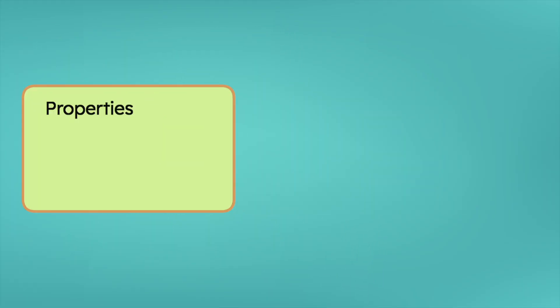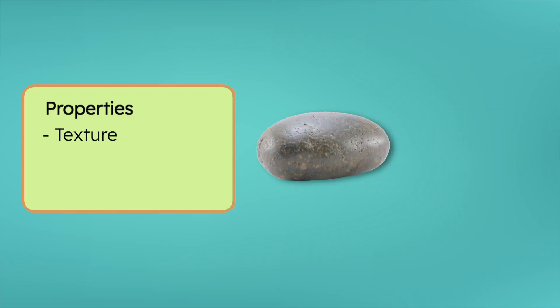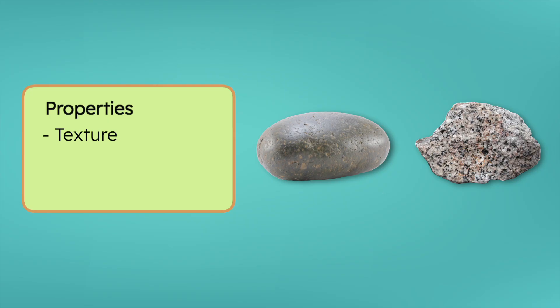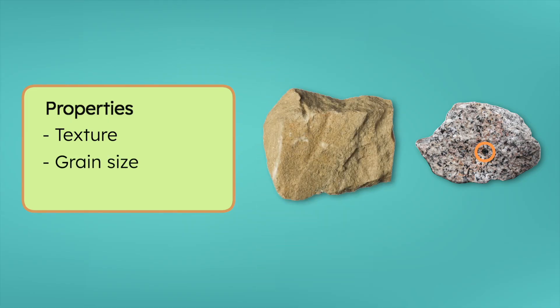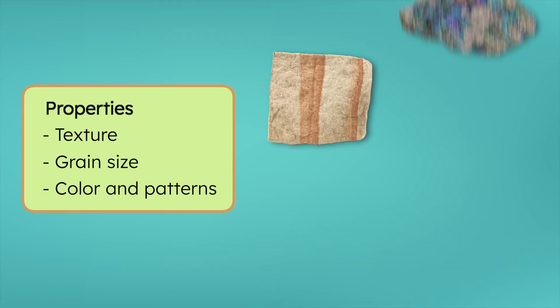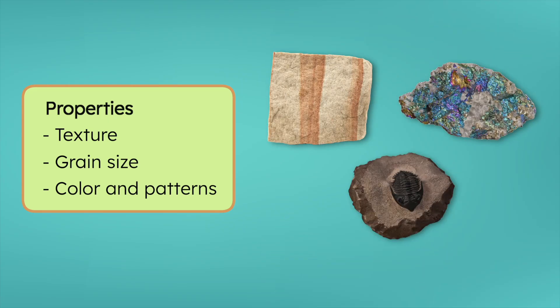Rocks have properties that help us tell them apart, like texture. How does the rock feel? Is it smooth or rough and grainy? Grain is what we call the tiny particles or crystals that make up the rock. Those grains can be different sizes — are they big and easy to see, or tiny and hard to spot? Rocks can also have different colors and patterns. Does it have layers, shiny streaks, or maybe even fossils? Through observing properties like texture, grain size, color, and patterns, scientists can identify specific rocks.